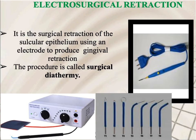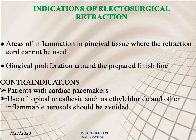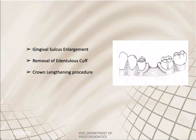Electrosurgical retraction of the gingiva is the surgical retraction of the sulcular epithelium using an electrode to produce gingival retraction; this procedure is called surgical diathermy. Indications include areas of inflammation in gingival tissue where retraction cord cannot be used, and gingival proliferation around the prepared finish line. Contraindications include patients with cardiac pacemakers, and the use of topical anesthesia such as ethyl chloride and other flammable aerosols should be avoided.